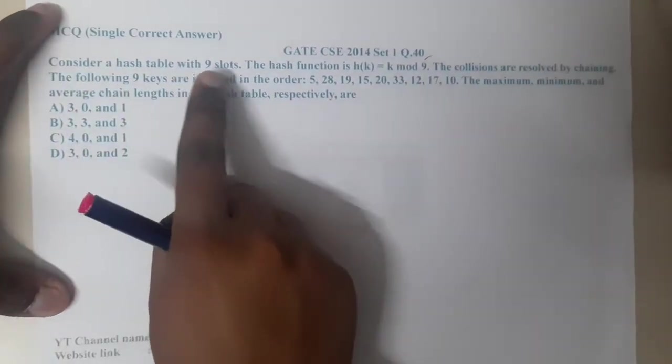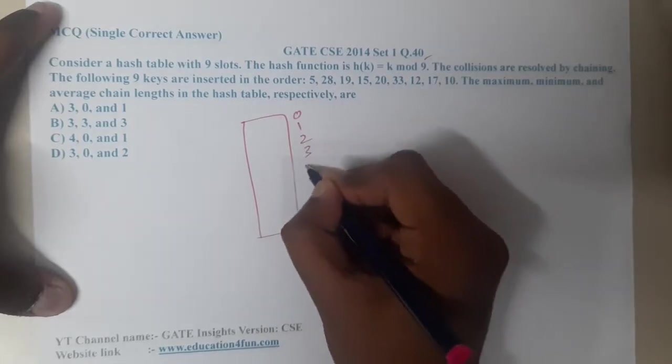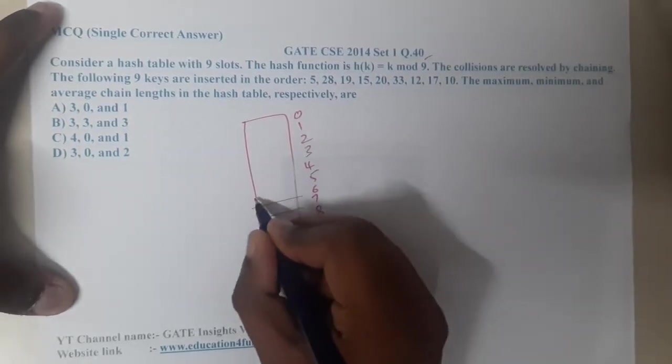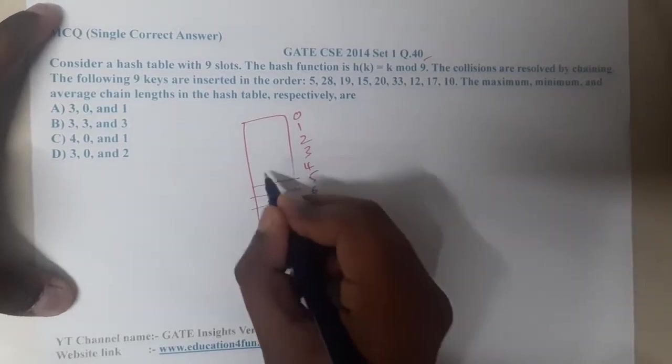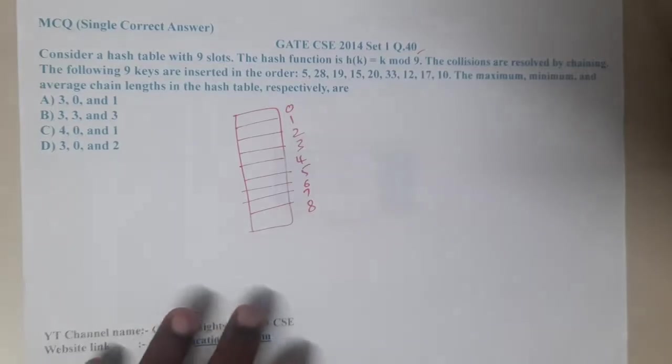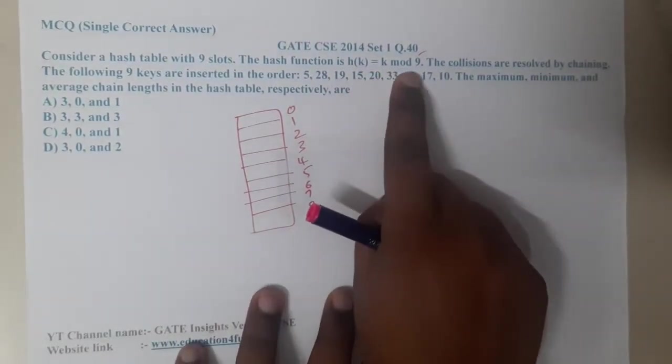Consider a hash table with nine slots. There are in total nine slots - 0, 1, 2, 3, 4, 5, 6, 7, 8 only. Let me draw it carefully because I don't want to confuse myself while writing things.